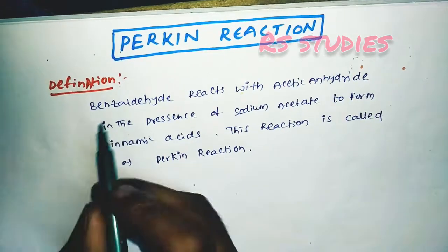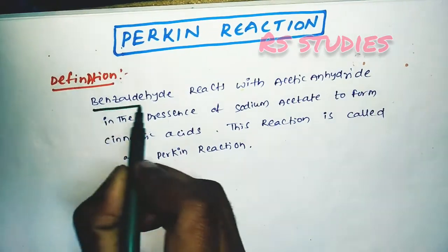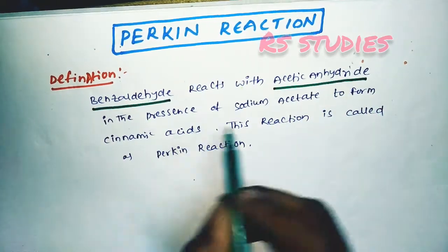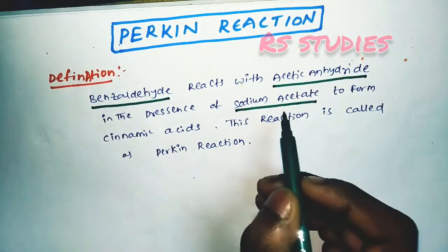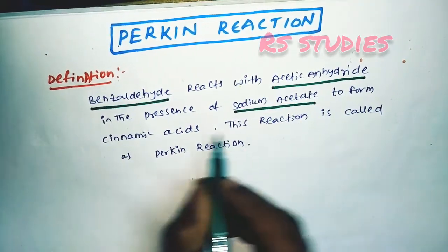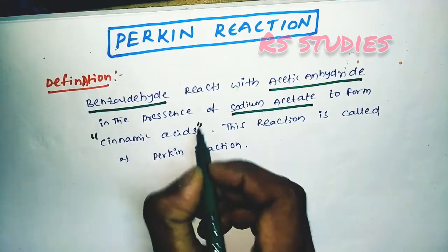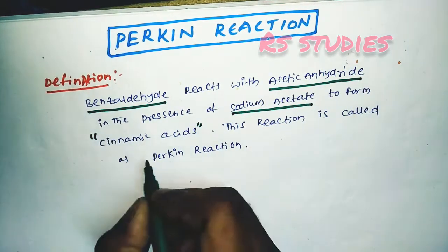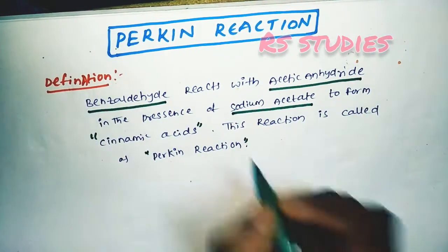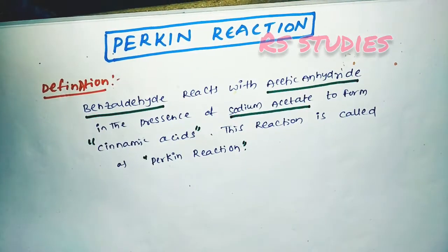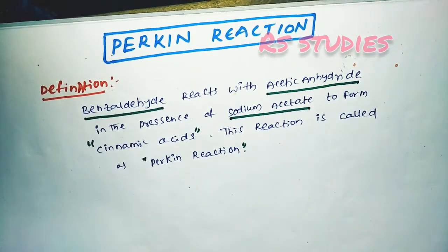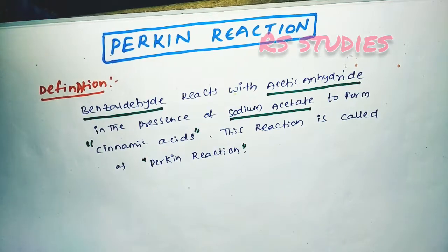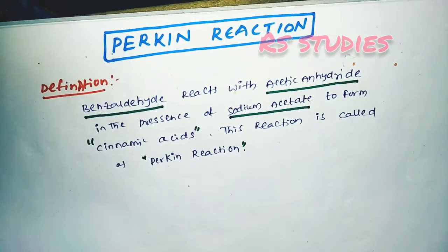So, benzaldehyde reacts with acetic anhydride in the presence of sodium acetate to form cinnamic acid. You can see the reaction — first we are choosing benzaldehyde, and benzaldehyde reacts with acetic anhydride.